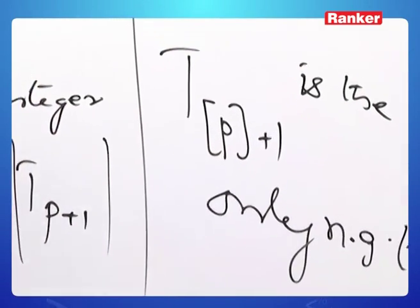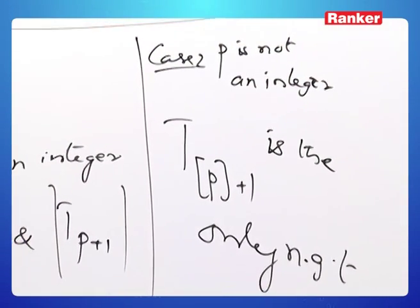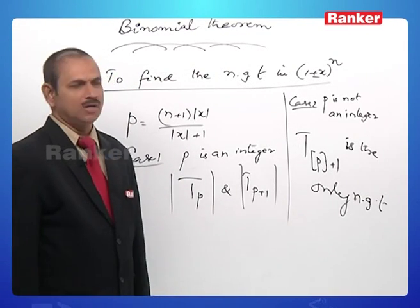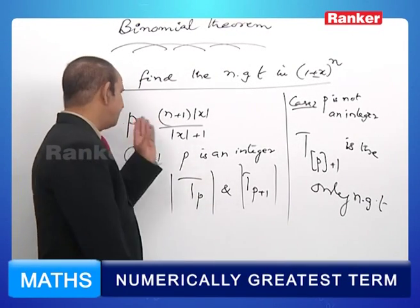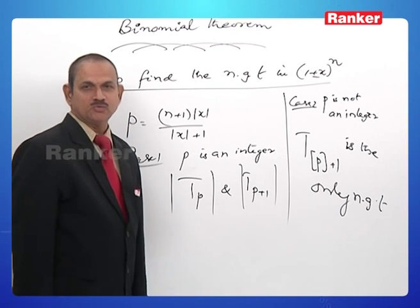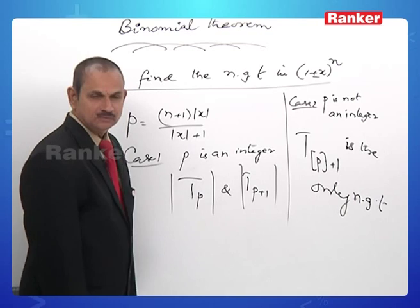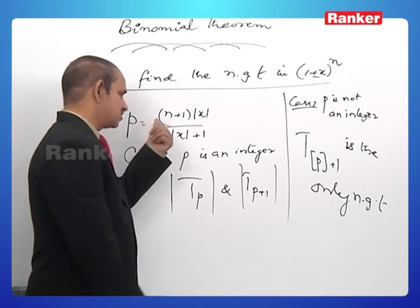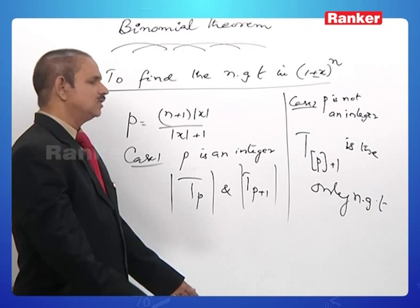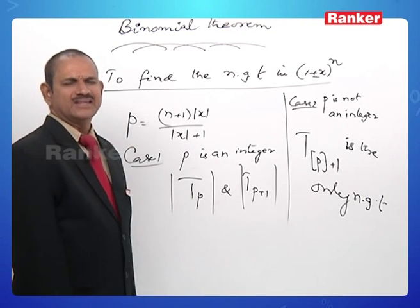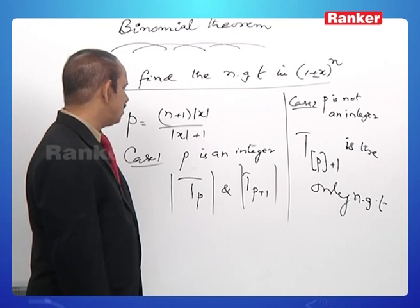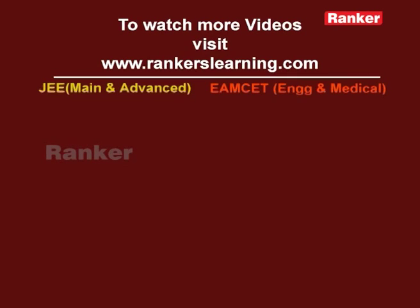So first of all, in order to find the numerically greatest term — to determine which term is the numerically greatest term — you must be able to find the value of p. What is p? p = (n+1)|x| / (|x|+1). The proof of this is also very simple, but to save time we are just noting it.